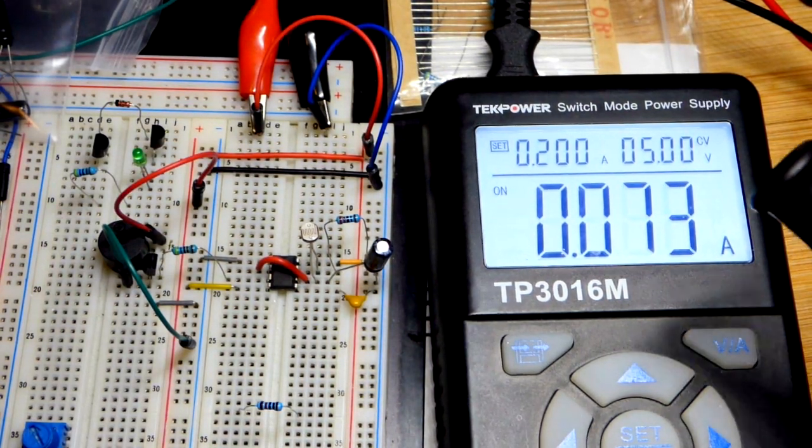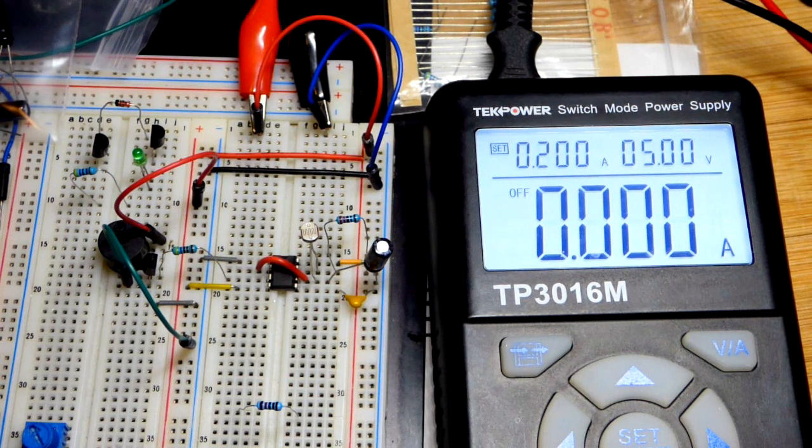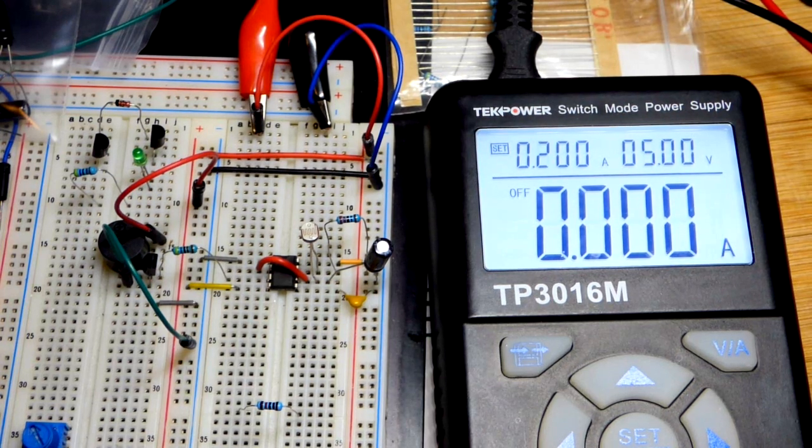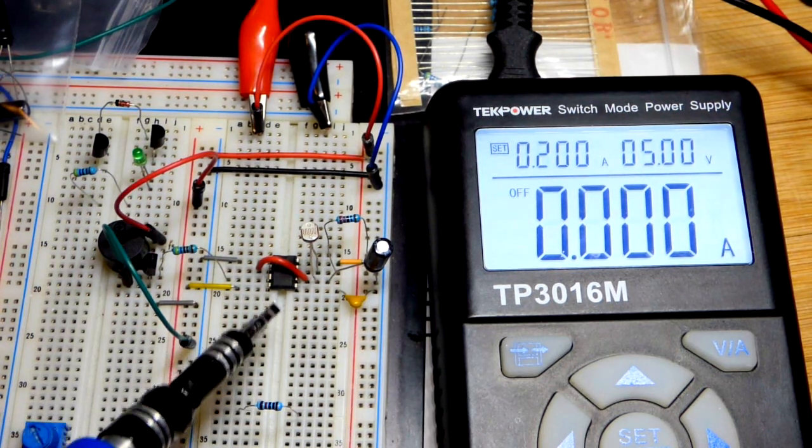So, looks like every component I have on the board right now is okay. Because, apparently, I fried quite a few earlier. And, so, looks like at first, it was the buzzer that fried a 555 timer.